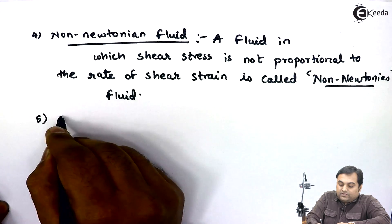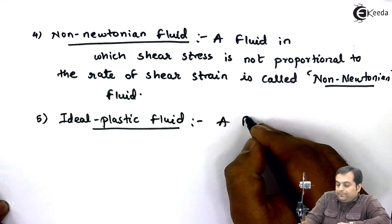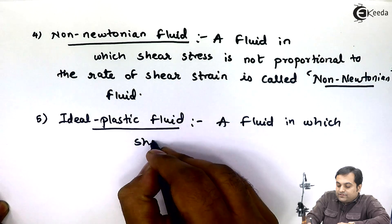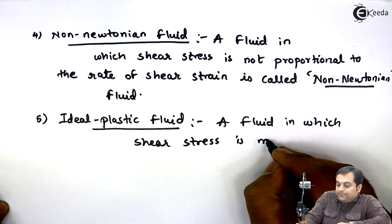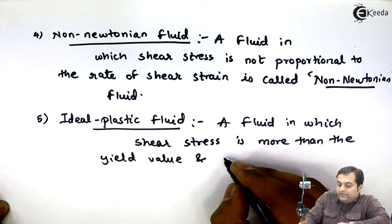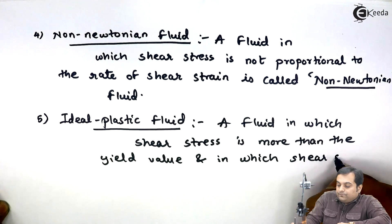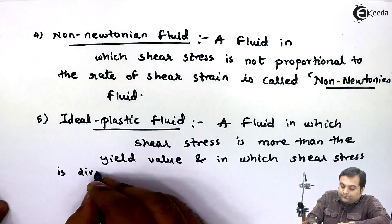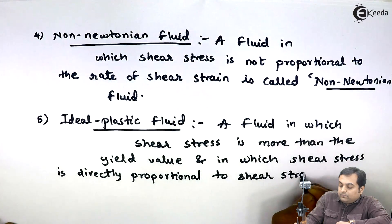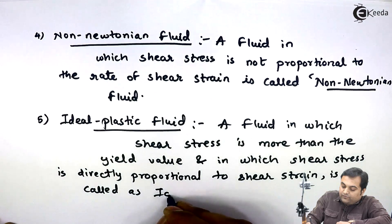The last one is ideal plastic fluid. A fluid in which shear stress is more than the yield value and in which shear stress is directly proportional to shear strain is called an ideal plastic fluid.